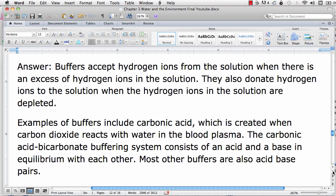Too much carbon dioxide can make the pH of blood unstable. Therefore, the carbonic acid-bicarbonate buffering system has an acid and a base that are in equilibrium with each other. Most other buffers are also acid-base pairs.